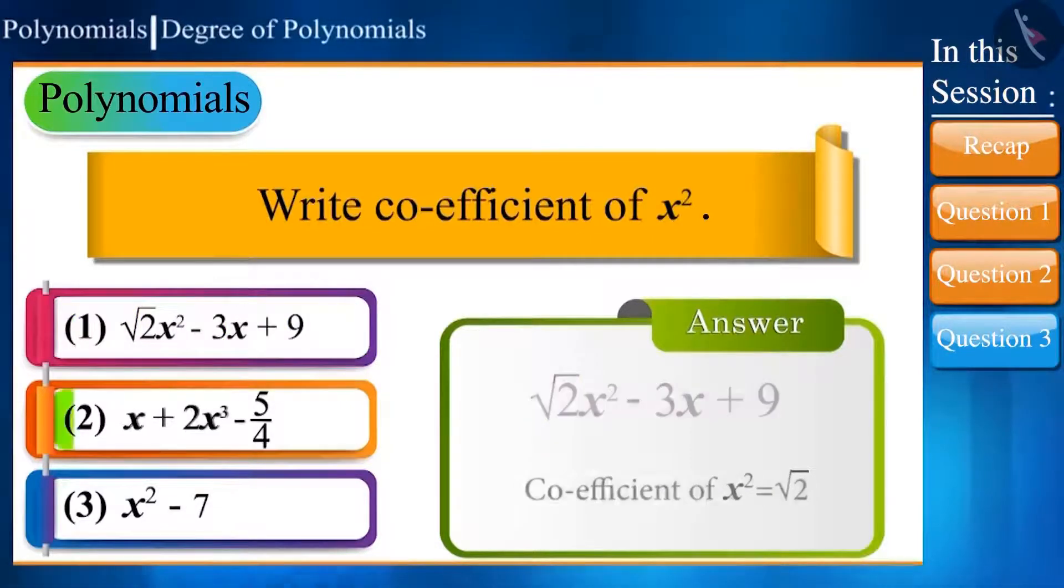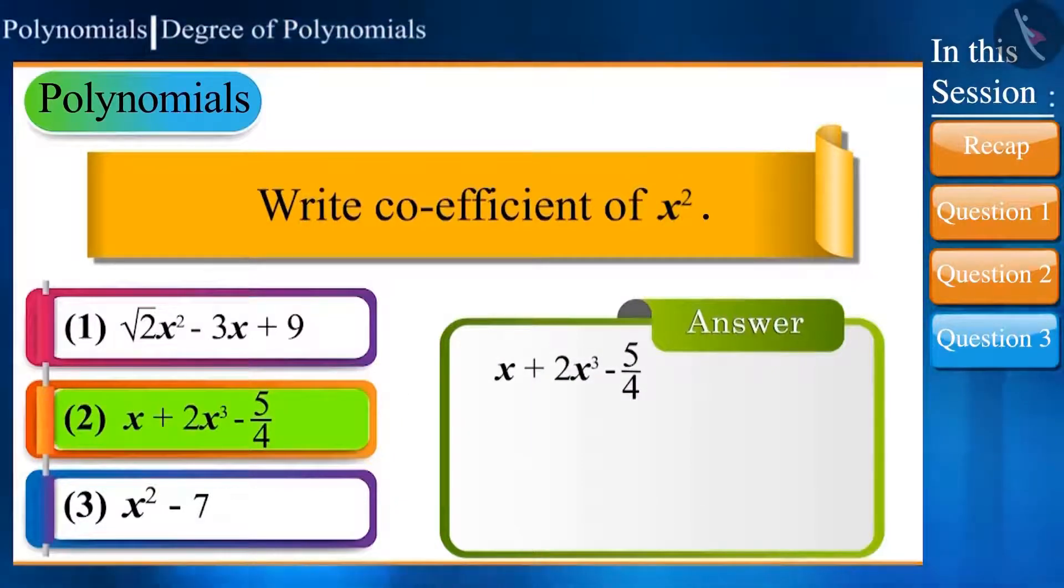Now, let us go ahead and see the expression x plus 2x to the power of 3 minus 5 by 4. Here, x square is not present in the equation. Now, how to find its coefficient?